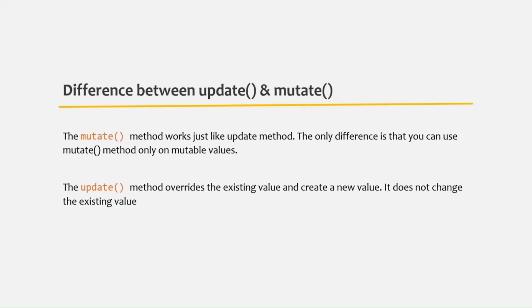Mutate method works just like update method. The only difference is that you can use mutate method only on mutable values. For example, value types like number, string, boolean, etc. are not mutable.